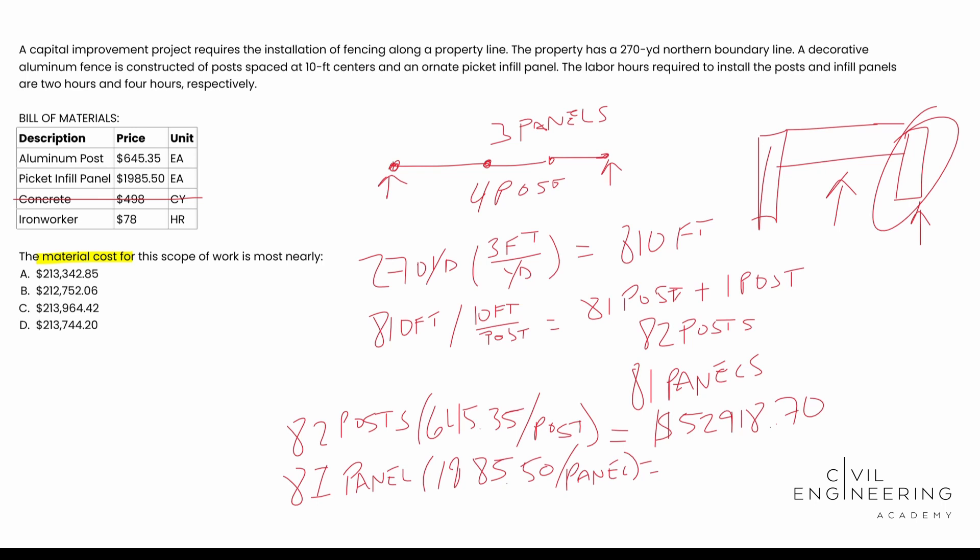So now then we need to go ahead and do our panels here. We end up with $160,825.50. So if we add these costs together to get our total material cost, you end up with $213,744.20. There's your answer. Your answer is D.